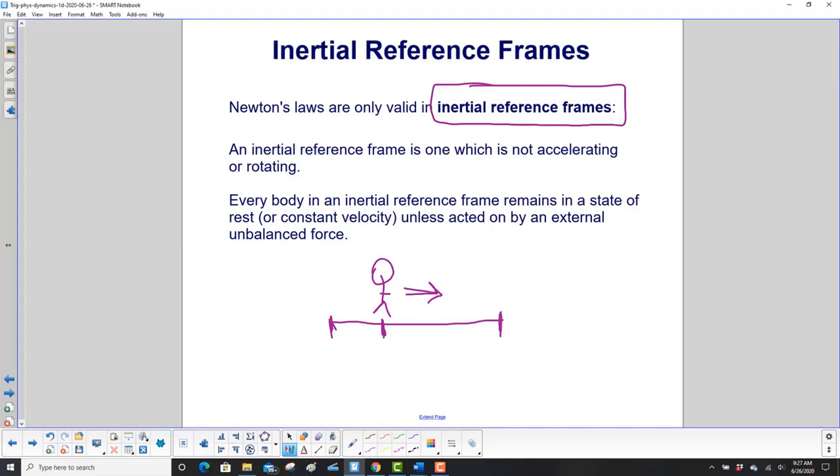An inertial reference frame is a special one. It is not speeding up or rotating. Every body in an inertial reference frame remains in a state of rest or constant velocity unless acted on by an external unbalanced force. So we're taking Newton's first law and limiting it to inertial reference frames. So what is not an inertial reference frame? Let's wait for the next slide.